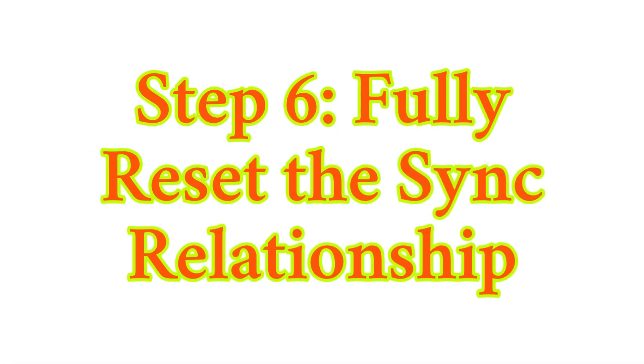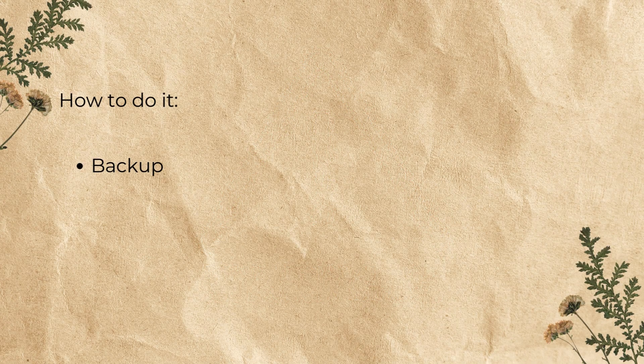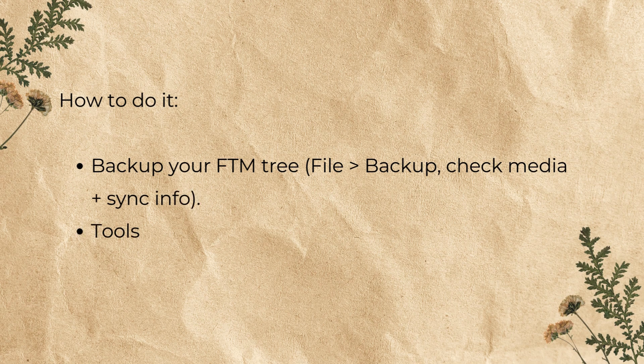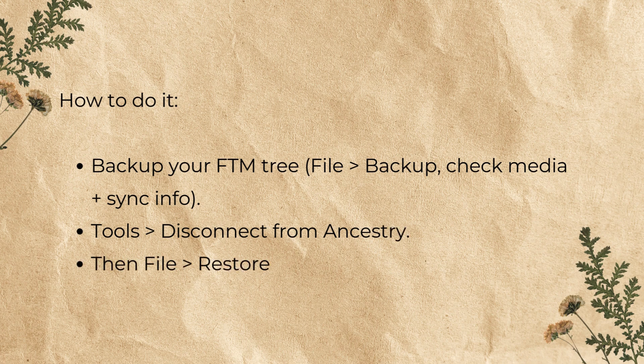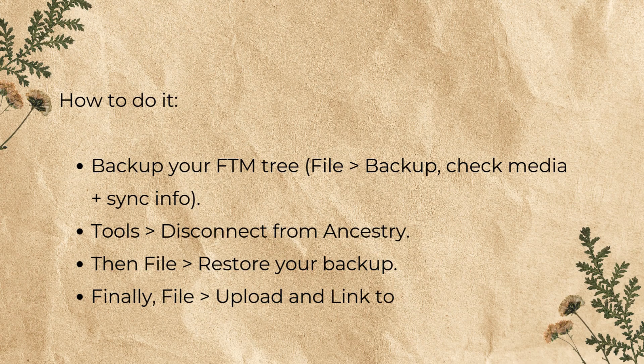Step 6: Fully reset the sync relationship. If the sync itself is broken beyond repair, you may need to start over. Warning: choose whether to keep your Ancestry tree or overwrite it. To do it: backup your FTM tree via File > Backup, check 'Media plus Sync Info,' then go to Tools > Disconnect from Ancestry. Then File > Restore your backup. Finally, go to File > Upload and Link to Ancestry as a new tree. Fresh sync equals fresh start.